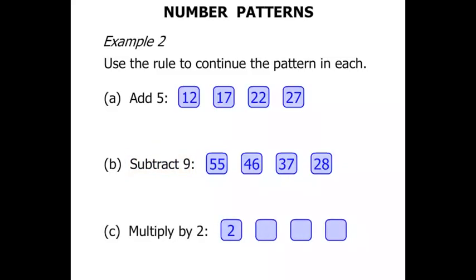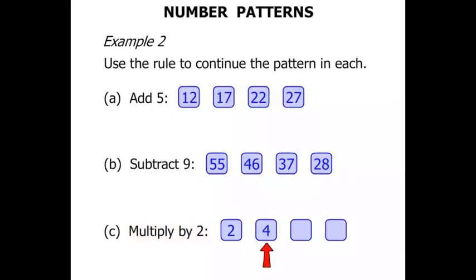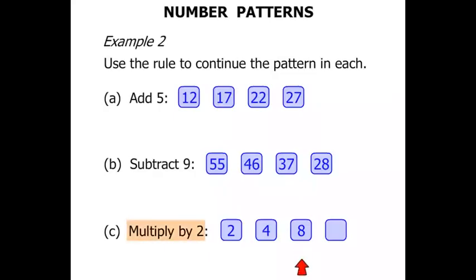Let's multiply by 2 for this one. We're starting with 2 and multiply by 2 — in other words, double it. So 2 times 2 is 4, 4 times 2 is 8, 8 times 2 is 16.